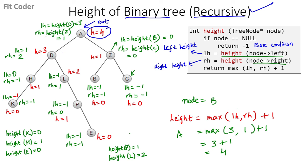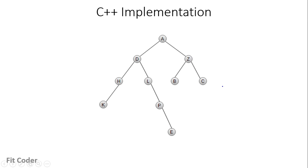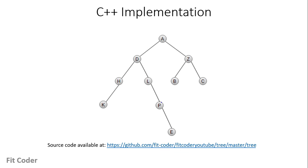By calculating the left and right heights for all subtrees, we find the height of the root, which equals the height of the binary tree. The time complexity of this method is O(n) because we visit each node of the tree only once. Let's now look at the implementation — all source code is available in the GitHub repository linked in the description.